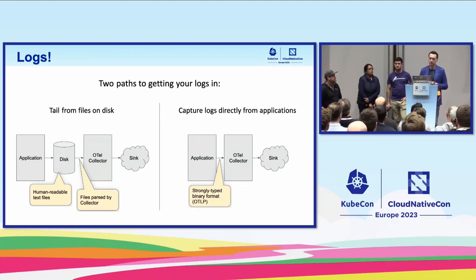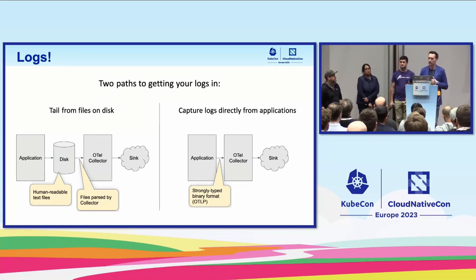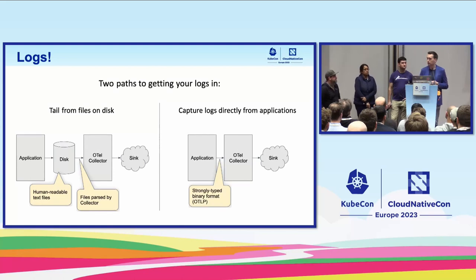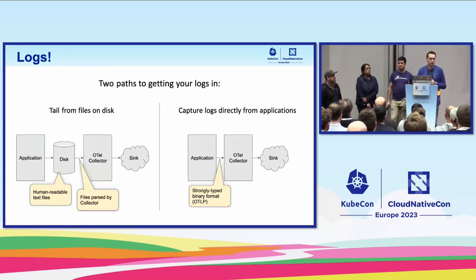In some languages in the future, we may choose to have a developer-facing logging API. C++ is sometimes raised as an example of a language where there isn't a super native logging API that people already use, so in those cases we may begin to offer one. But in most languages like Java, we'll simply adapt to whatever APIs people are already using. If you have feedback or thoughts on this, please let us know at the end of the session or in the community.